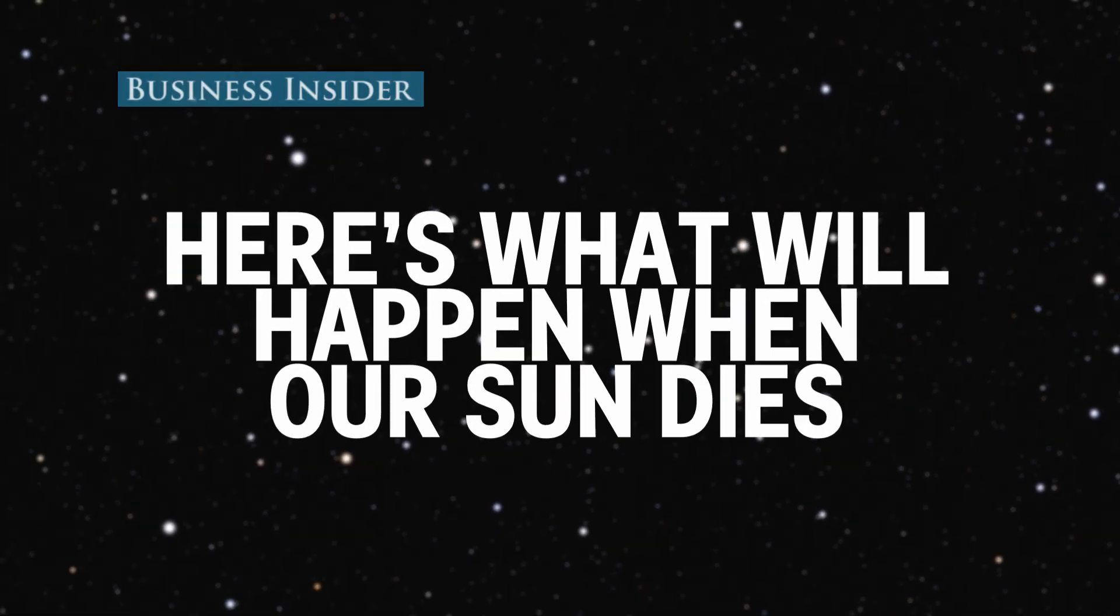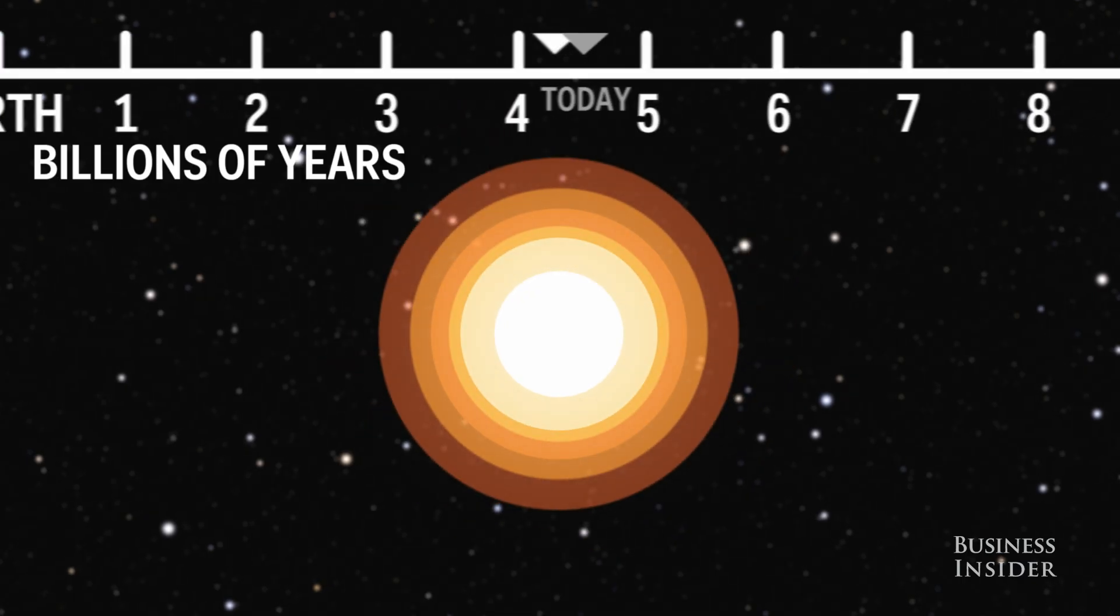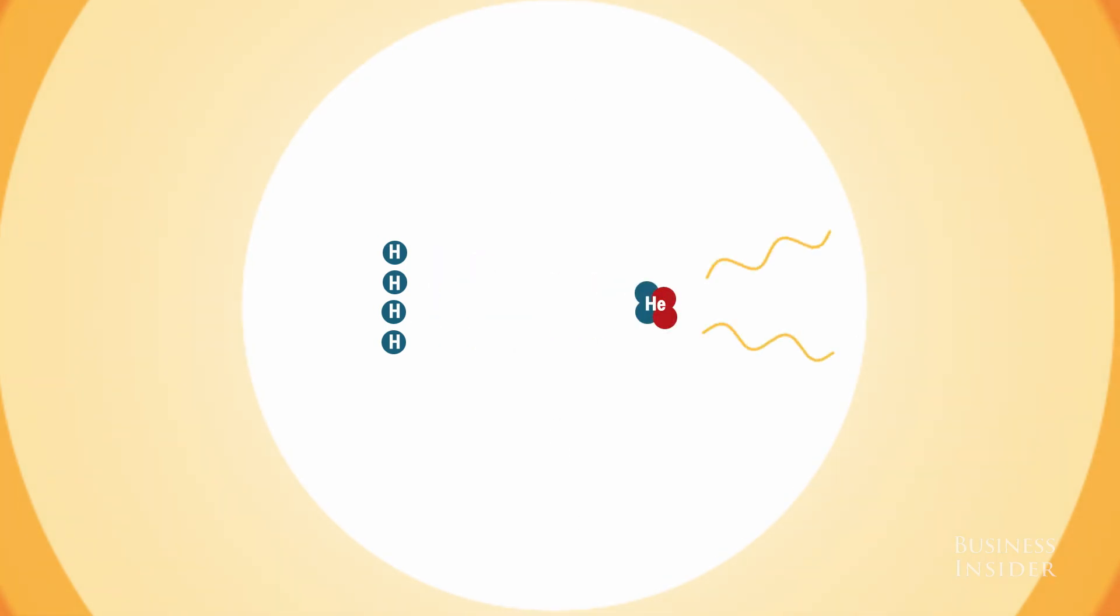Like all stars in the universe, the Sun is not immortal. The Sun was born 4.57 billion years ago. It survives by burning 600 million tons of hydrogen atoms into helium atoms in its core every second.